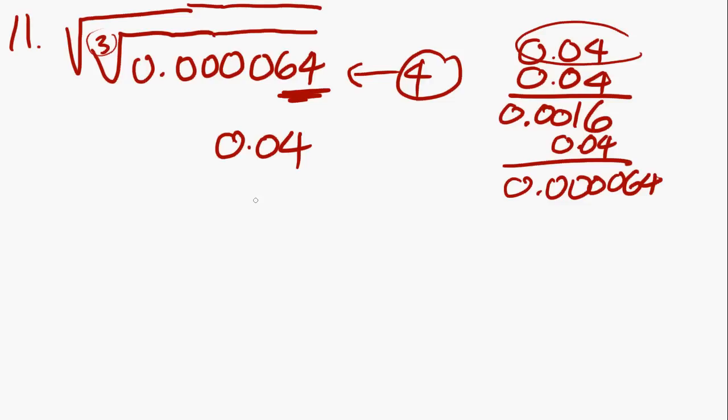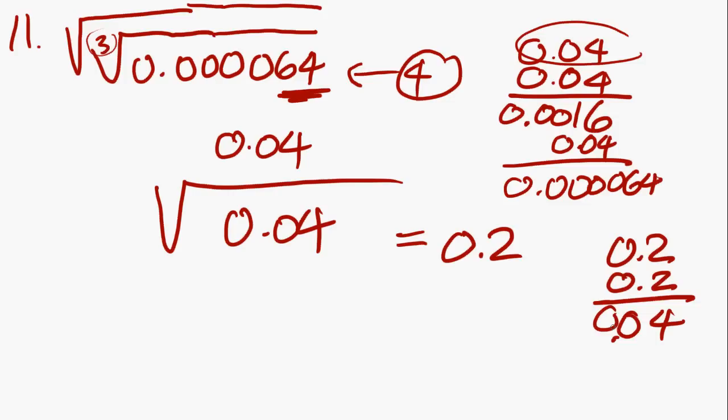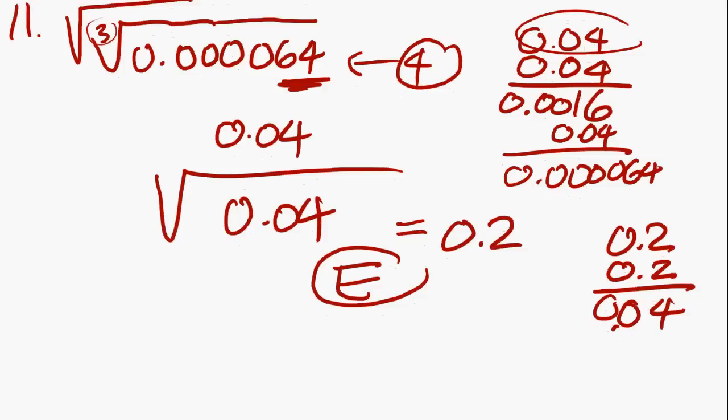So what we know here is that the cube root of this number is 0.04. We just have to take the square root of that, and the square root of 4 is 2. There's a zero in front of it, so you know that the answer is 0.2 because 0.2 times 0.2 is two decimal points there, 0.04. And that is answer E.